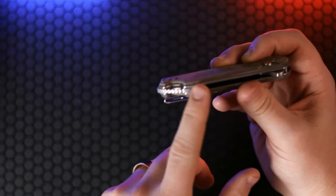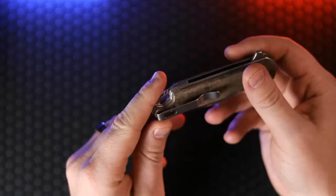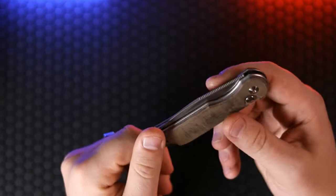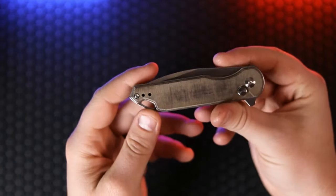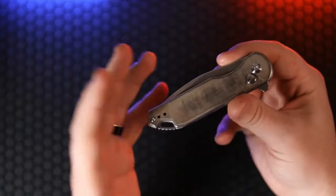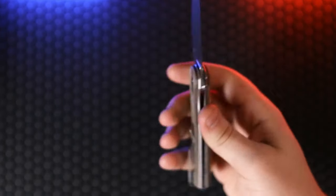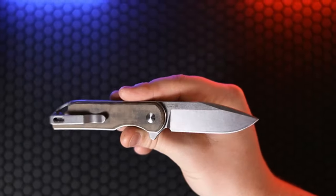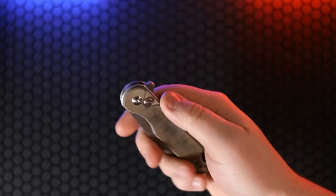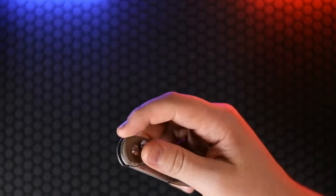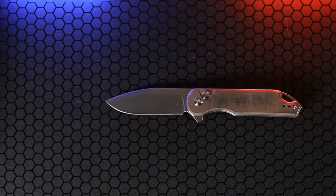I would have liked to have seen a titanium backspacer and a titanium pocket clip, but for all I know maybe they do have a more premium version of this, probably in 20CV and carbon fiber. I don't know, but I am interested to hear what your thoughts are. Have you checked out the Kaiser Assassin before? If not, why not? Do you have one? Let me know in the comment section down below.